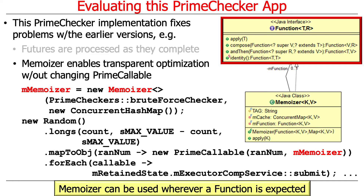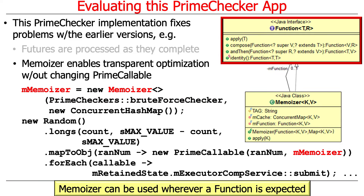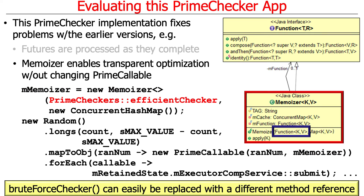That's a great example of behavior parameterization, which is one of the cool features you get with modern Java through things like method references, lambda expressions, and other features. You can easily swap from brute force to efficient without changing anything else in the code.